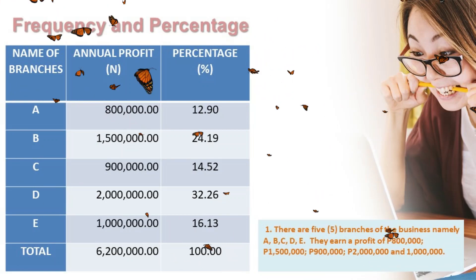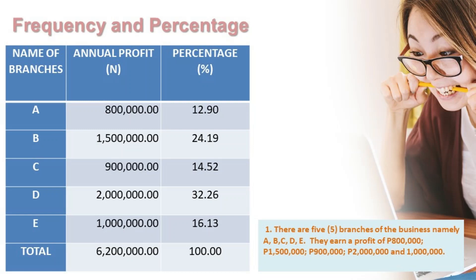For table number one, there are five branches of the business, namely A, B, C, D, and E. They earn a profit of $800,000, $1,500,000, $900,000, $200,000, and $1,000,000. We need to produce a table with the name of the branches, the N which is the annual profit, and the percentage. The total of all profits is $6,200,000, so that will be your base.